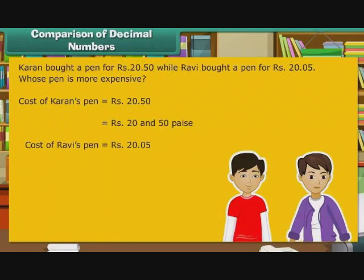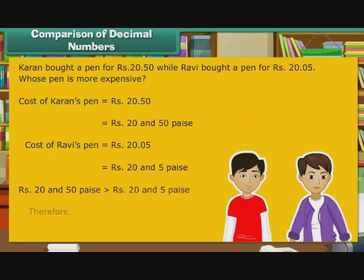The cost of Ravi's pen is Rs. 20.05. Comparing the two, Rs. 20.50 is greater than Rs. 20.05. Therefore, Karan's pen is more expensive.